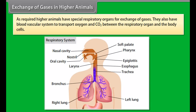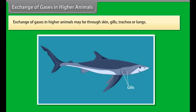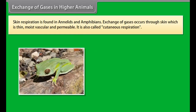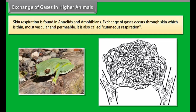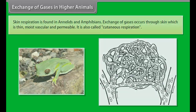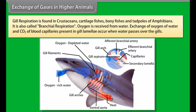Some common examples of lower organisms are amoeba, paramecium, sponges, and cnidarians. In higher organisms, the body wall is thick, so diffusion is not possible, and they have a high metabolic rate requiring high energy. Therefore, higher animals have special respiratory organs for exchange of gases and a blood vascular system to transport oxygen and CO2 between the respiratory organ and body cells.